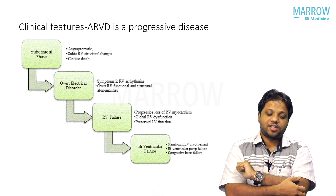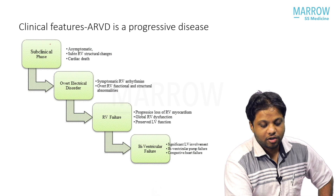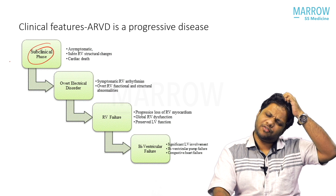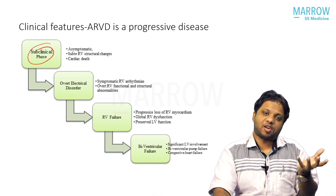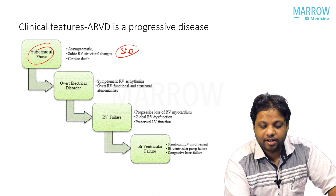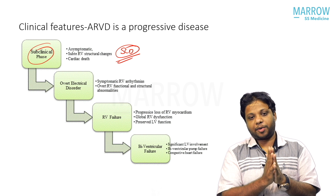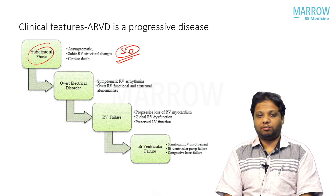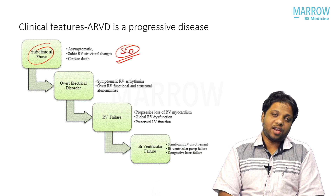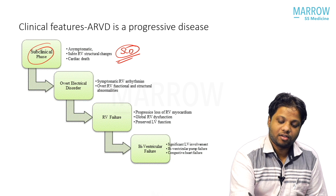ARVD is a progressive disease with four phases. Phase one is the subclinical phase, where the patient is asymptomatic with very few RV structural abnormalities and is very difficult to diagnose. However, this patient can present with sudden cardiac death — even if the echo might be normal.